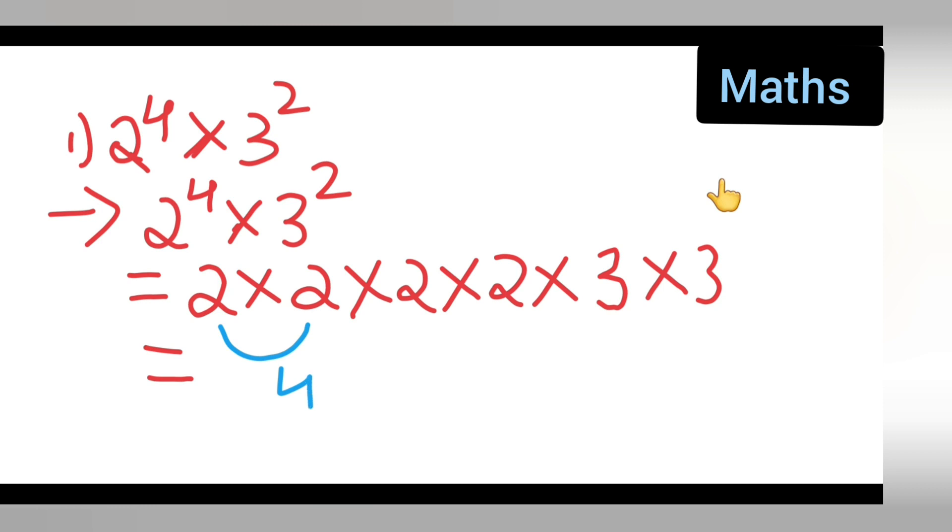So here 2 times 2 is 4, you will get here also 2 times 2 is 4. So if you multiply this, what you are going to get? 4 times 4 is 16, and 3 times 3 is 9. Now what you'll have to write is 16 into 9.